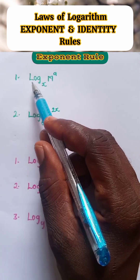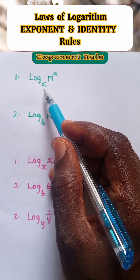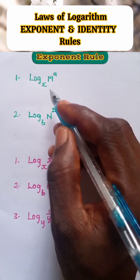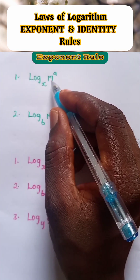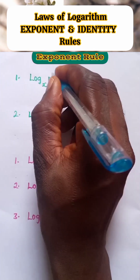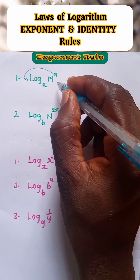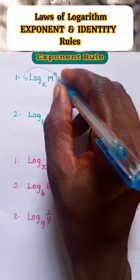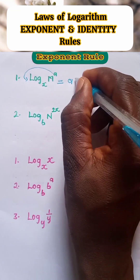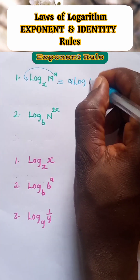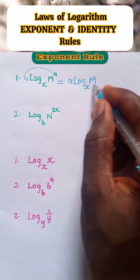Number 1: log of m to the power of a, to base x. The exponent rule says that if the argument of the logarithm is raised to a power, the power comes in front to multiply the entire log. Therefore, log of n raised to power a, to base x, is equal to a times log of n to base x. The a has come in front to multiply.